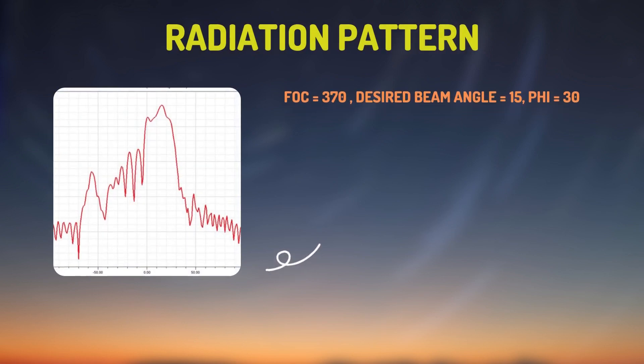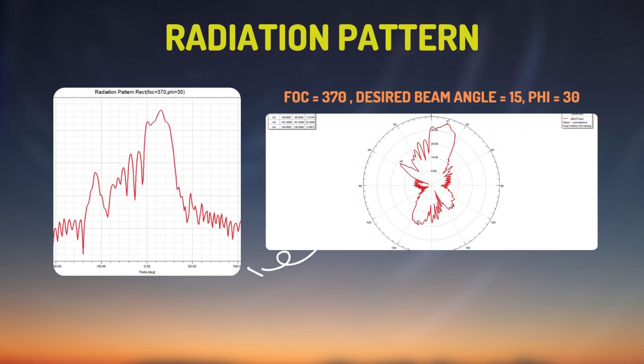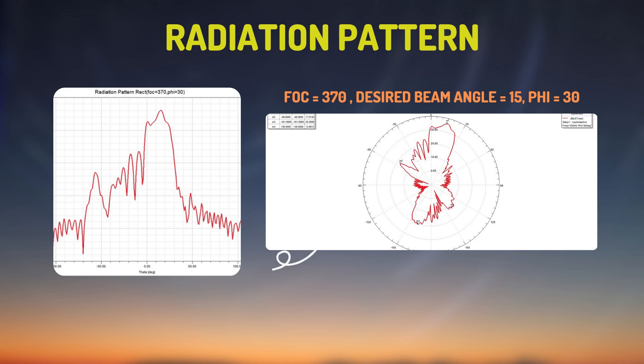Likewise, when the beam angle is 15, the phi angle is 30. Orientation occurs at 15 degrees as desired.